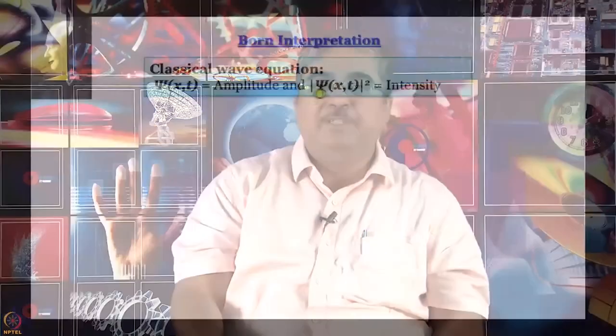Born provided an interpretation of what the wave function is. To do that, he went back to the point that the Schrödinger equation is essentially a classical equation — a classical equation for de Broglie waves. And if you think about a classical equation that can be written for the oscillation of a string, or the oscillations produced on the surface of a tabla, then one thing is known for sure: |ψ|², which means ψ* multiplied by ψ, gives an idea of intensity.